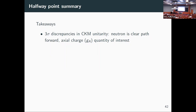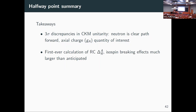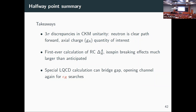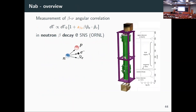The takeaways from the theory part: there's a three-sigma discrepancy in CKM unitarity, the neutron is a clear way forward, we want to know more about the axial charge ga, and we've done new calculations but we're not ready to start comparing against lattice QCD — we found much larger effects than expected (about 2%). Now let's get into experiment. The NAB experiment is at Oak Ridge National Lab, looking at neutron beta decay — in particular the so-called 'little a' parameter, the correlation between outgoing angle of the electron and anti-neutrino.